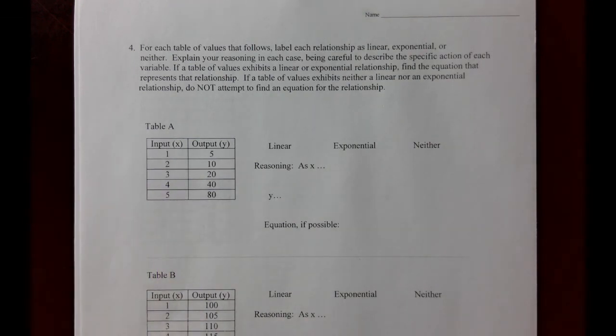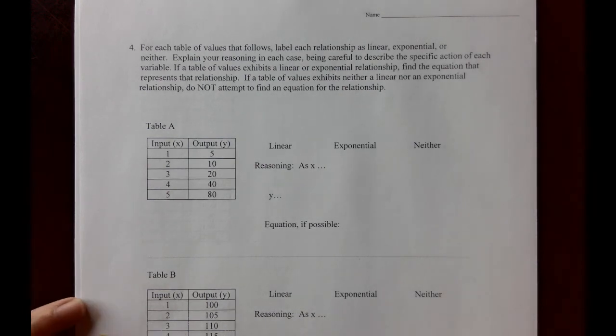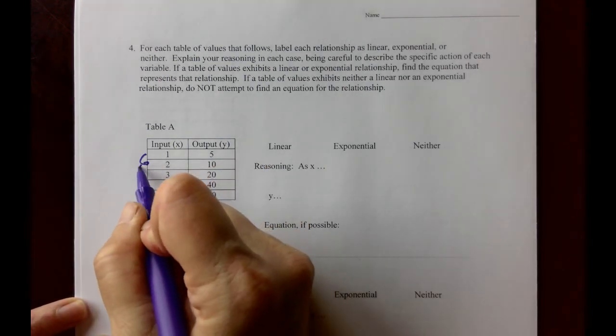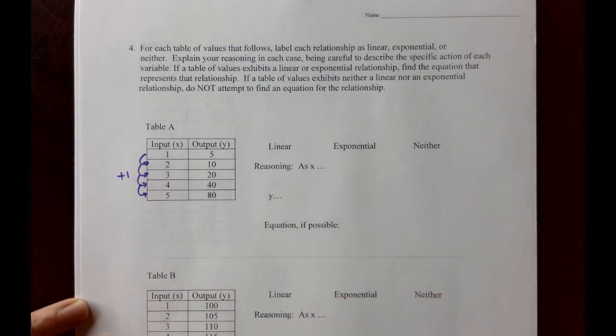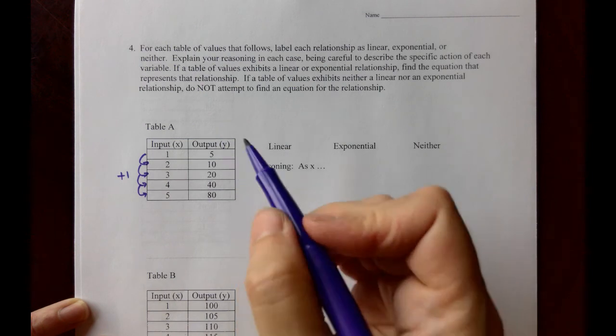Table A. The inputs x are 1, 2, 3, 4, and 5. The outputs y are 5, 10, 20, 40, and 80. If we go through the x's, we'll notice that the x's all increase by 1 each time, and that's going to be the case for all of them that we do here today. But it won't be the case for every table on the planet. So the x is increased by 1.